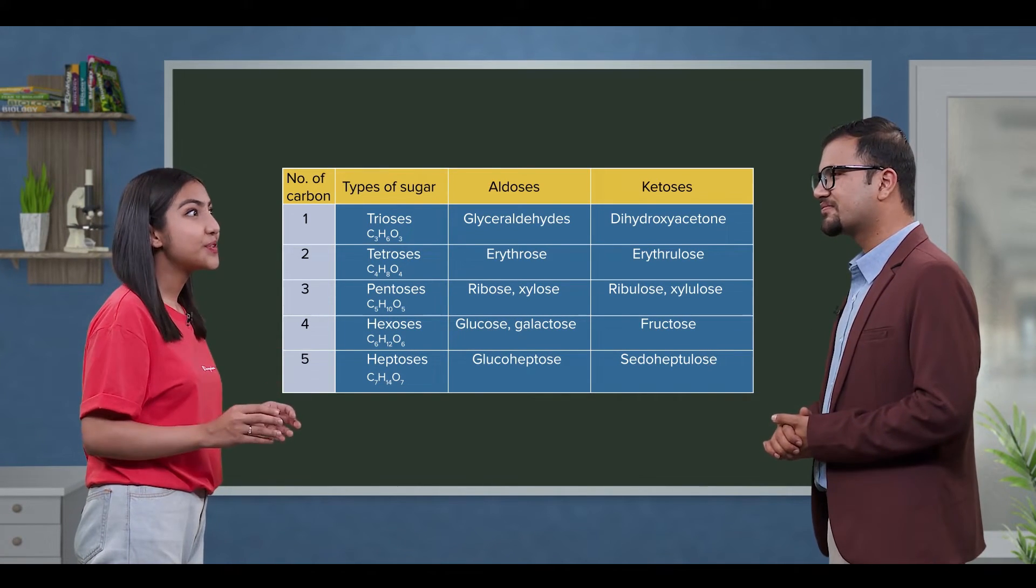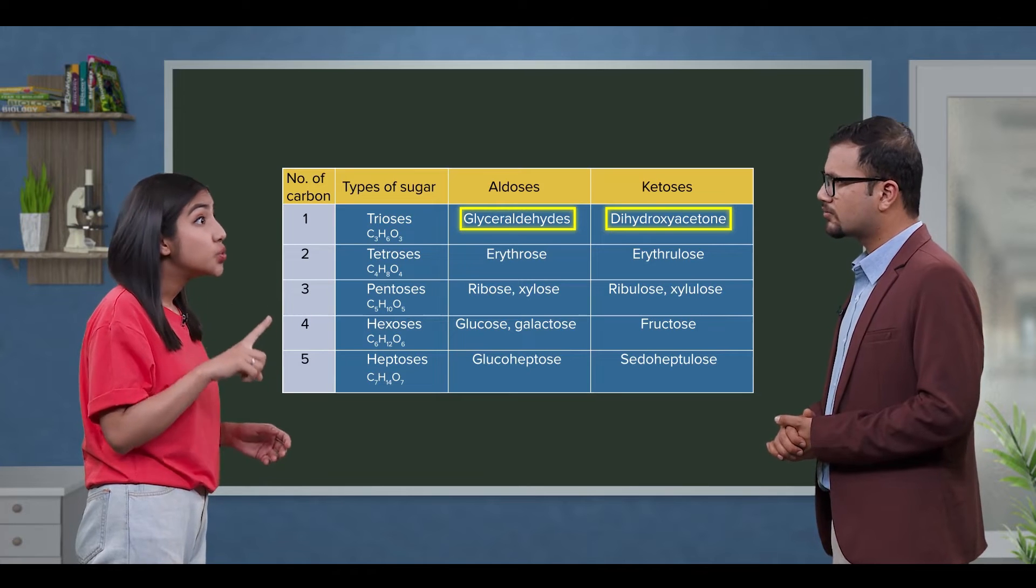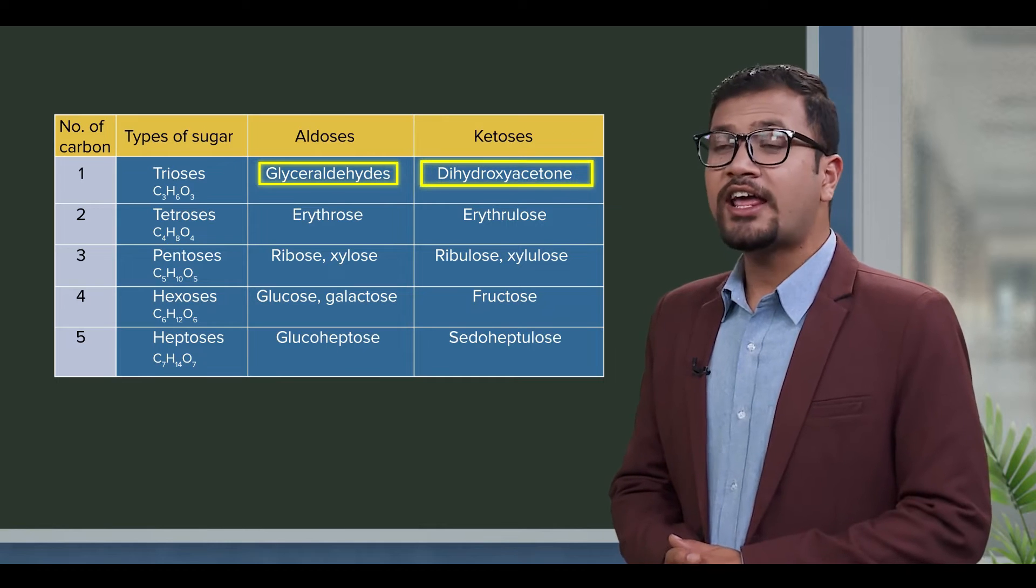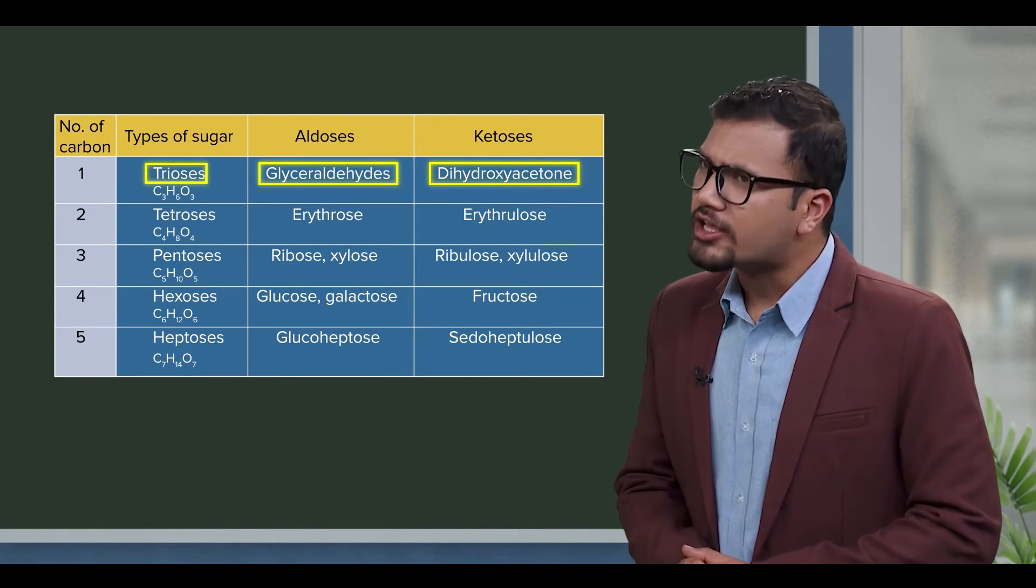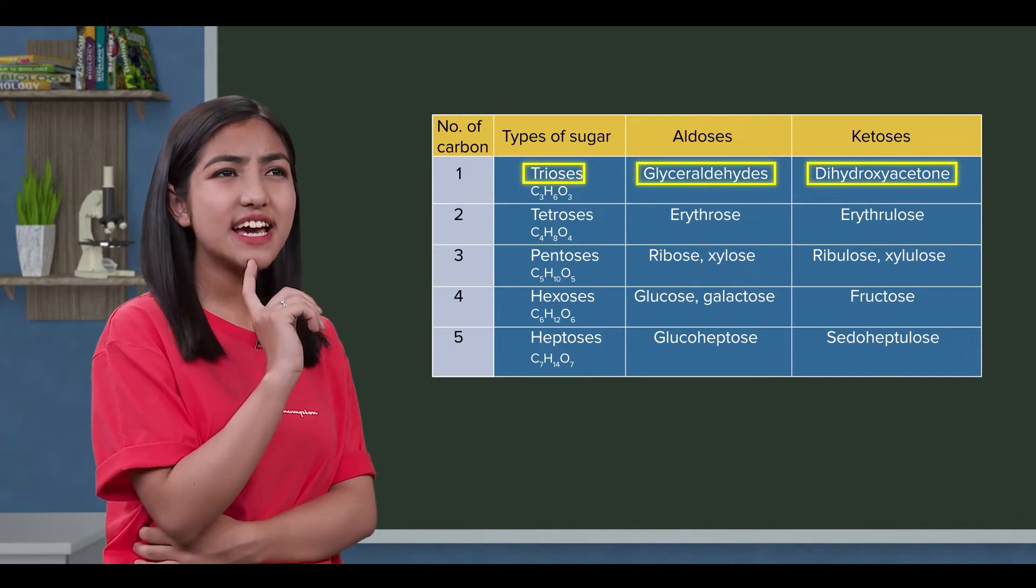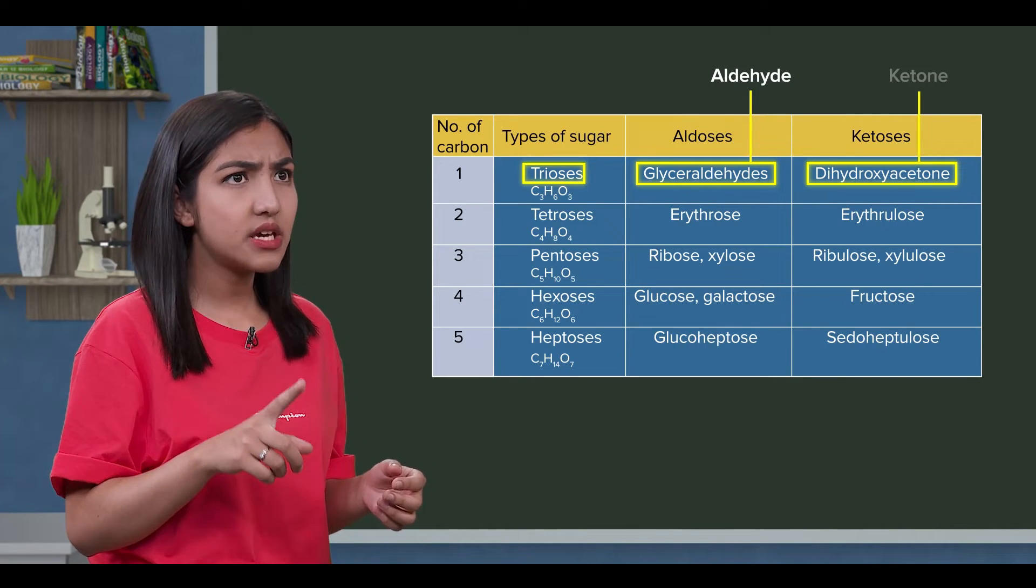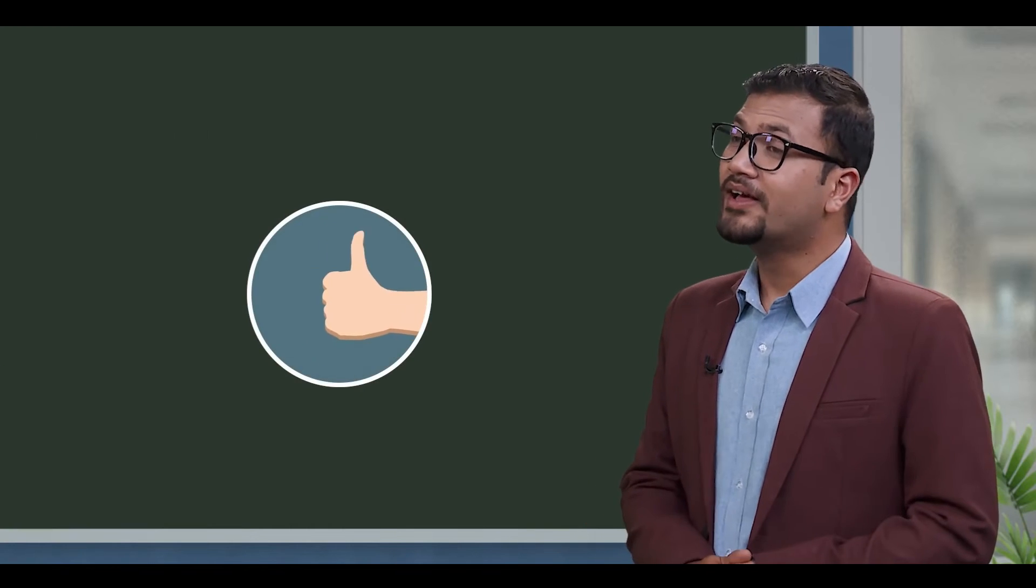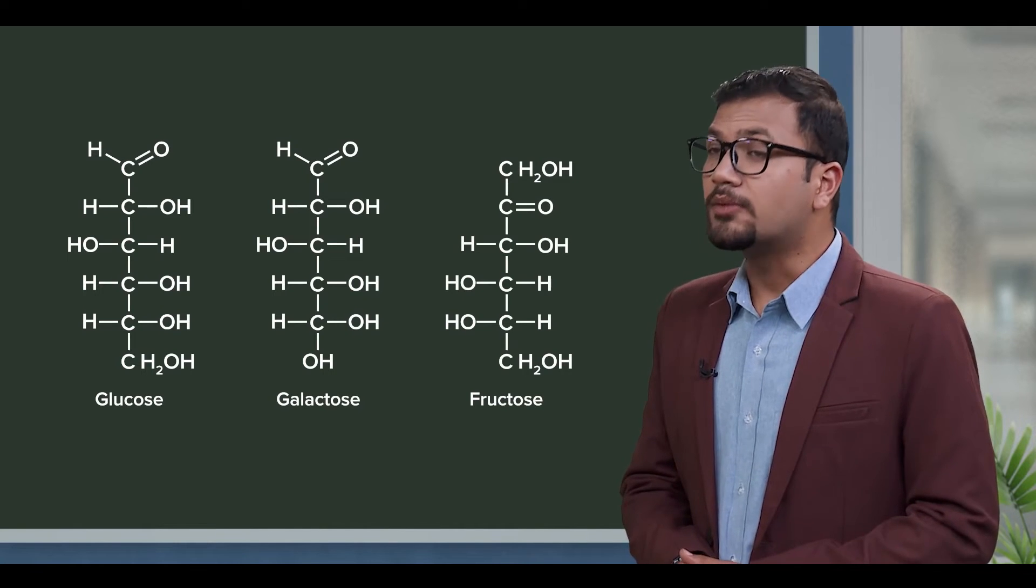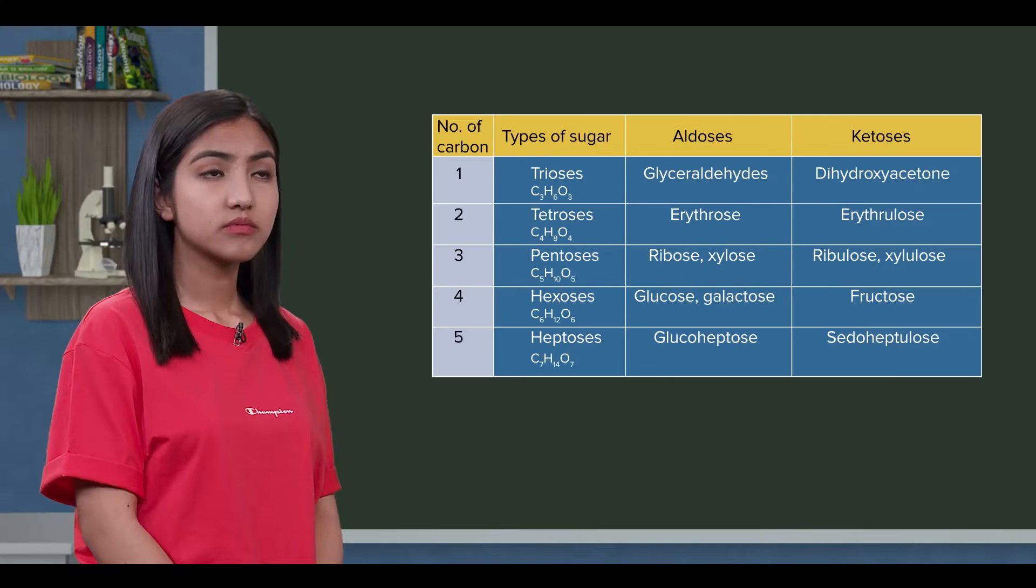Teacher, I noticed that glyceraldehyde and dihydroxyacetone both have 3 carbon atoms. So, glyceraldehyde and dihydroxyacetone are in the triose group. And in glyceraldehyde, the aldehyde group is present, and in dihydroxyacetone, the ketone group is present. It's very interesting. Glucose, galactose and fructose all have 6 carbon atoms. Glucose and galactose are aldoses, and fructose is a ketose.